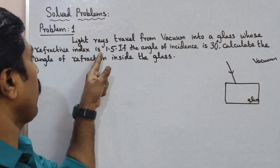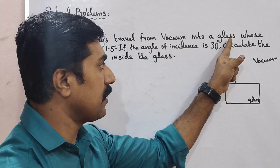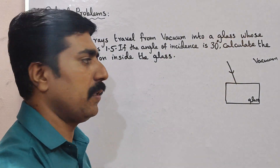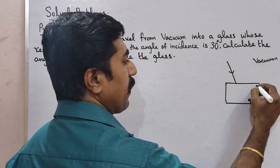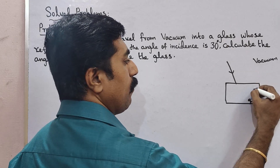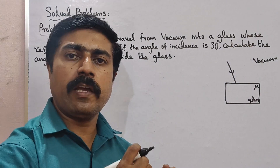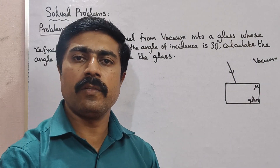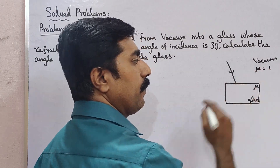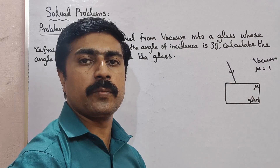The refractive index given is 1.5 — this is for glass. The notation for refractive index is mu. For vacuum, the refractive index mu1 has a constant value of 1. The refractive index notation can also be written as n; both mu and n are used.